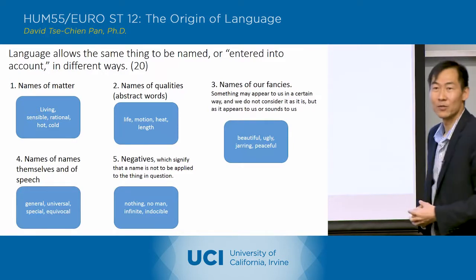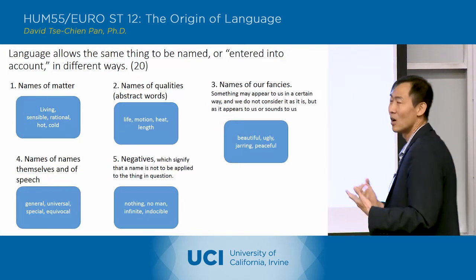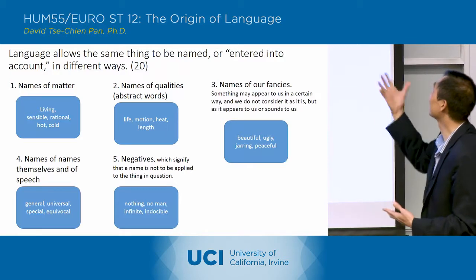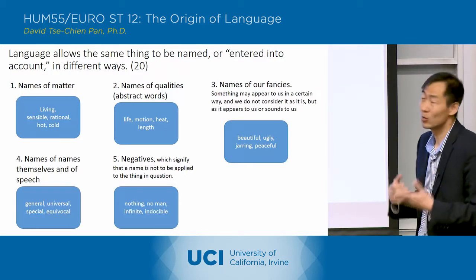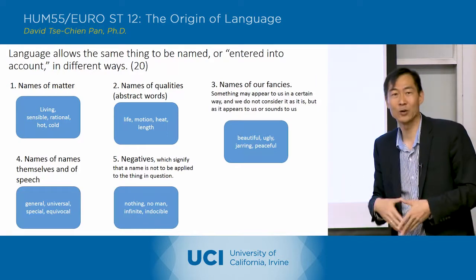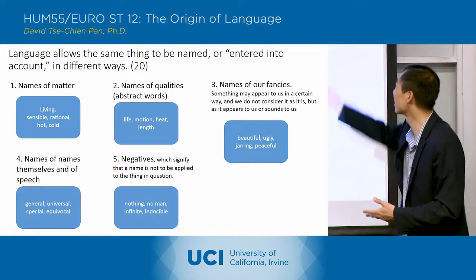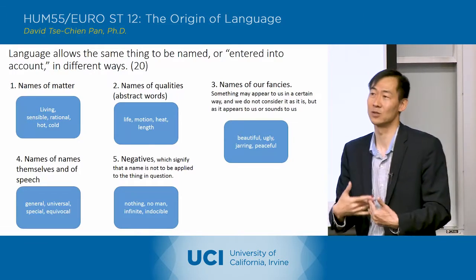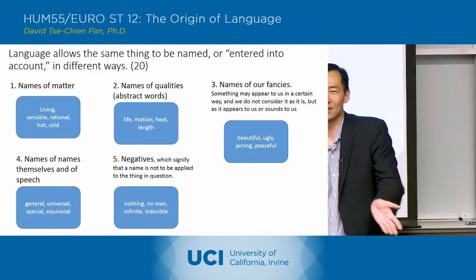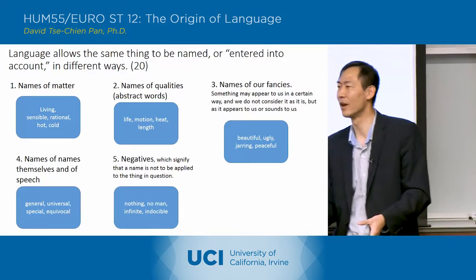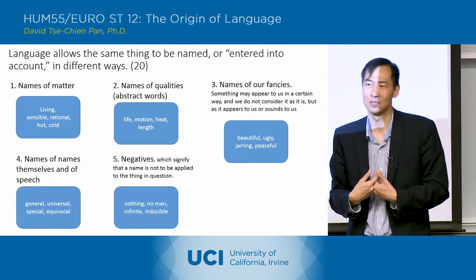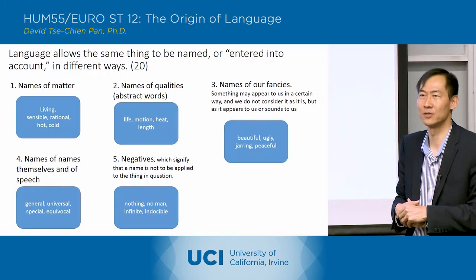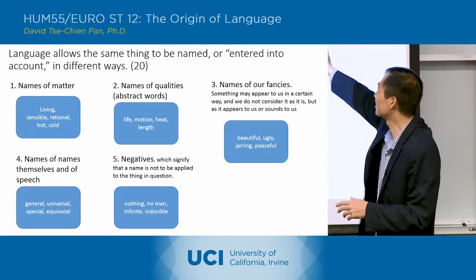Next he says there are names of our fancies — our impressions of things, which are separate from how they really are in the world. Something may appear to us in a certain way: something can be beautiful, ugly, jarring, peaceful. These are our reactions to things and may have nothing to do with the thing itself. He says that's a whole category of words that describes our impressions of things.